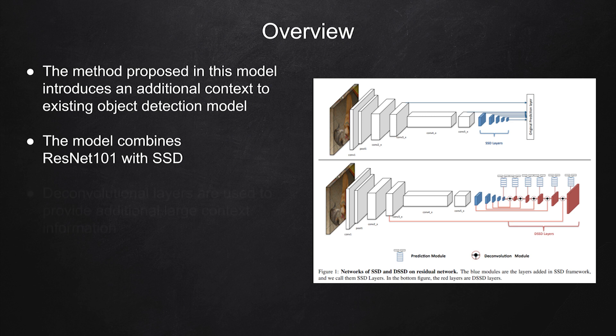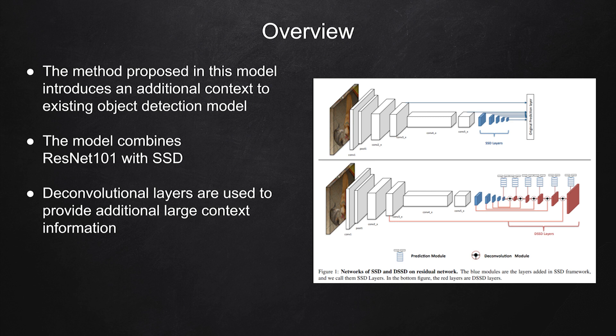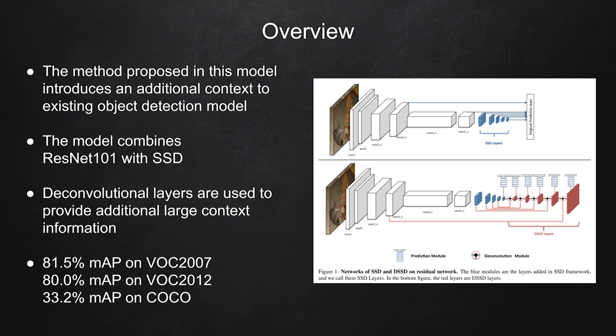To this module with SSD and ResNet-101 backbone, deconvolutional layers are added to provide larger context information. Adopting this module to the existing detector increases the performance of the model on small objects. The DSSD model achieves a mean average precision score of 81.5 on Pascal VOC 2007, 80% on VOC 2012, and 33.2 on the COCO dataset.